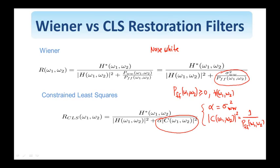One way to think about it: for the CLS, I choose C and alpha as shown here, and then the CLS gives me exactly the same answer as the Wiener filter. Or going the other way around, you might model the autocorrelation and therefore the power spectral density of the image such that this equation holds, and you get a CLS filter. Conceptually, both filters try to achieve the same result. C(ω₁, ω₂) is the frequency response — the magnitude of a high-pass filter — and the same is depicted by 1 over P_FF(ω₁, ω₂).